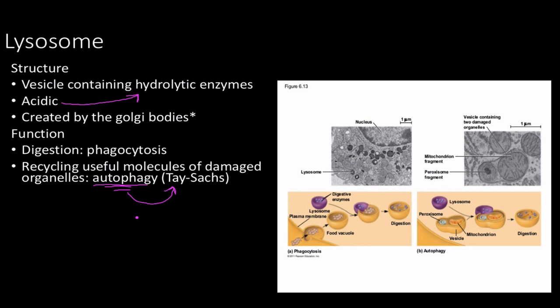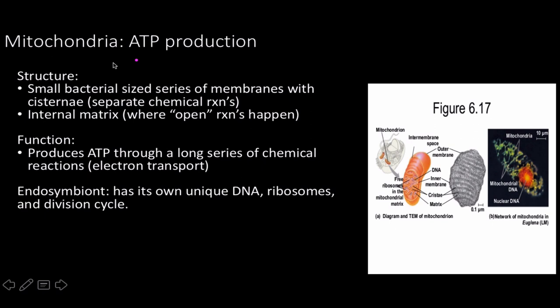Autophagy is well illustrated by Tay-Sachs disease. In Tay-Sachs, a protein involved in lysosome function is mutated and absent, causing the lysosomes to be unable to do their job. Certain biomolecules such as lipids build up in excess within the lysosomes and can't be fully broken down. Systemically this causes a lot of oxidative stress, and with Tay-Sachs specifically there's plaque buildup in the brain, resulting in a slow neurodegenerative disease. The picture shown illustrates autophagy — a damaged mitochondrion being broken down by the lysosome so its still-useful biomolecules can be recycled.